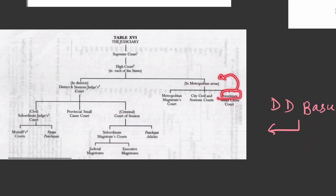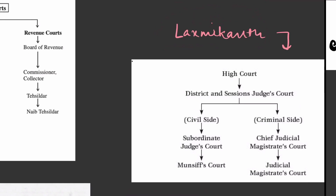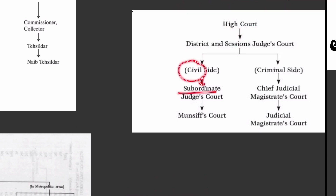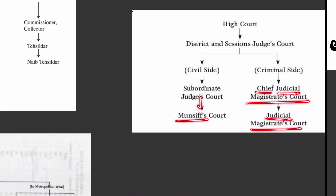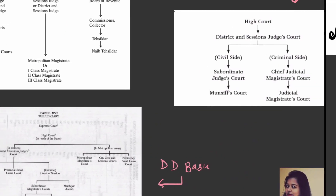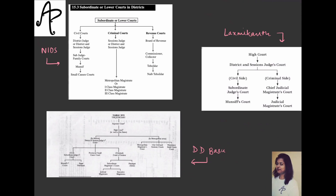Please do not get confused — just go with this, and this is also given in your prescribed textbook. You will roughly get an idea because this is the explanation in your book. Under the High Court, you will see the District and Sessions Judges Court, which is divided into civil and criminal matters. In Civil you will have the Subordinate Judges Court; in Criminal you will have the Chief Judicial Magistrate Court. It has been given to simplify things — it is not wrong.